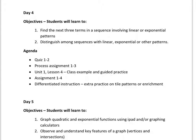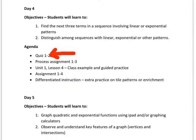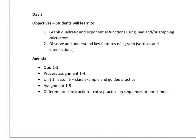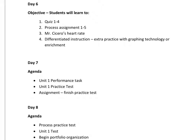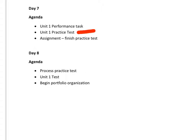Day four has objectives and agenda, and you'll notice we put our quizzes in there. On the fourth block that we see each other we're shooting to have a quiz, if not sooner. Day five has objectives and agenda, day six has objectives and another quiz. On day seven it looks like we'll be having a practice test, and within eight days we will be having a test on our first unit. So that's something to keep in mind — each day counts and each minute in class counts.